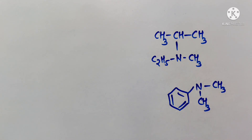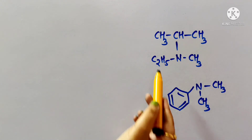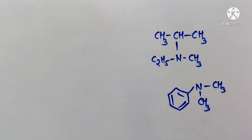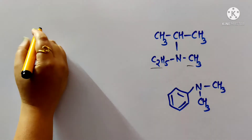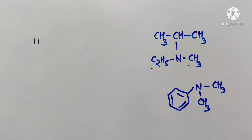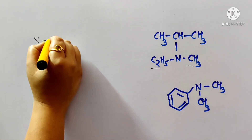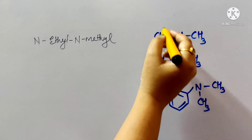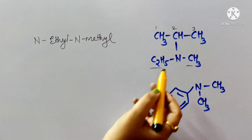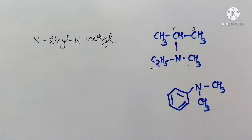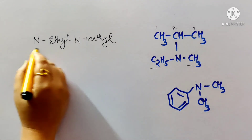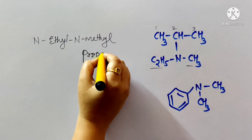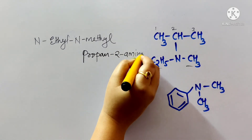For a tertiary amine with ethyl, methyl, and isopropyl groups, the common name is ethylmethylisopropylamine. The ethyl and methyl are N-substituents (ethyl listed first alphabetically). Since nitrogen is attached to the second carbon of the isopropyl chain, the IUPAC name is N-ethyl-N-methylpropan-2-amine.